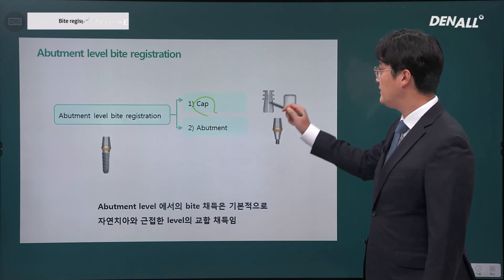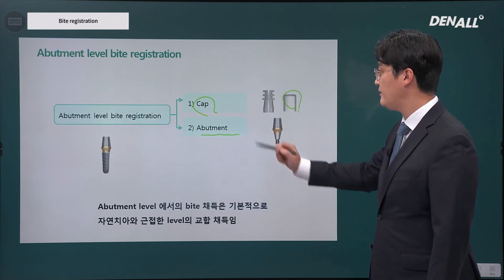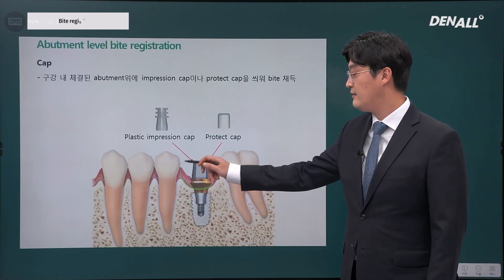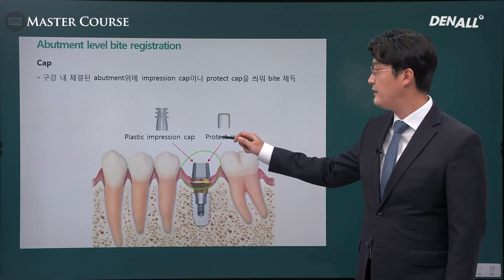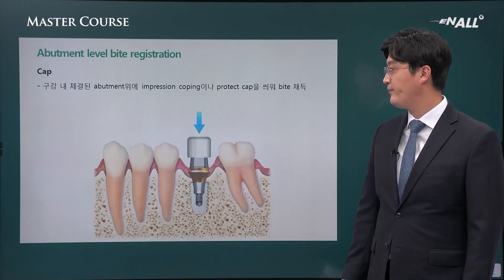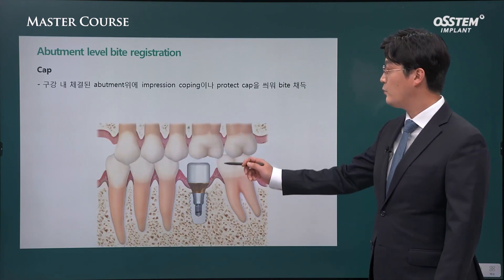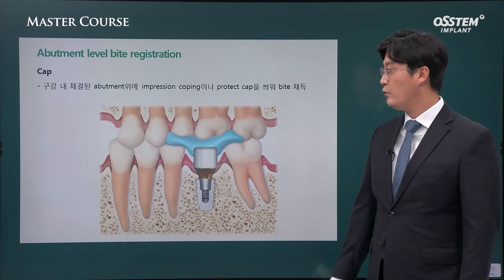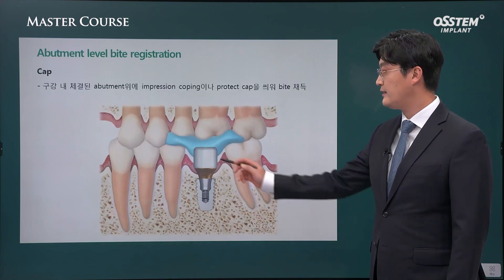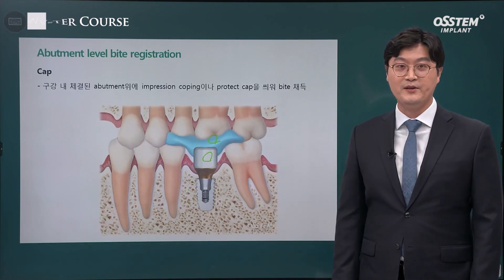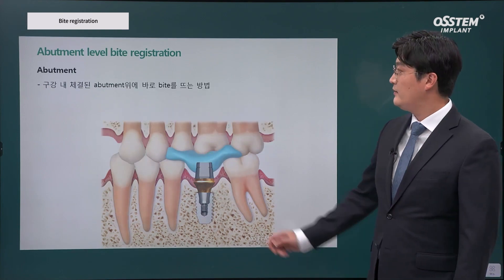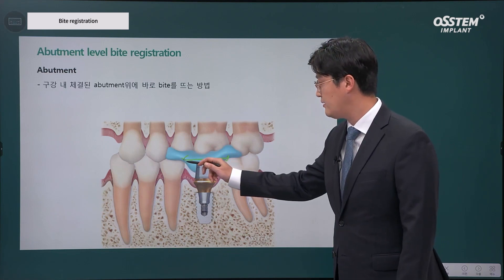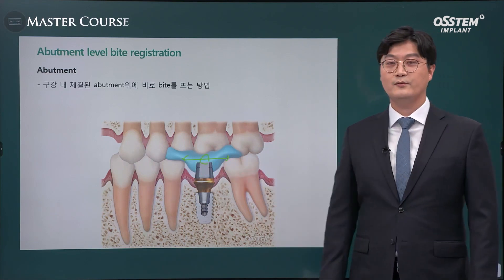For abutment-level registration, you can use a cap or follow natural tooth registration steps. This is only applicable when an off-the-shelf abutment is used — a cap that corresponds to that abutment is placed, and you take a bite, check the relationship with the opposing teeth, register the bite, and deliver the cap and bite registration to the lab. On the abutment level, generally the natural tooth bite registration steps will be the ones used.